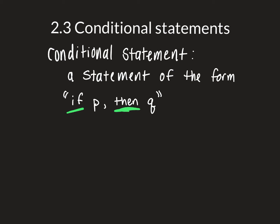We've talked about these in science class as a hypothesis. So again, it has if, a statement, comma, then, another statement. The notation for this is p arrow q — if p, then q — meaning that p implies q. P is referred to as the hypothesis, and q is the conclusion.